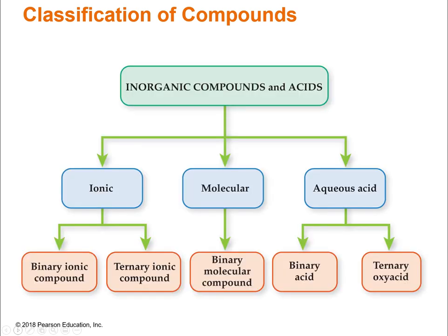This flowchart helps to classify all the various types of compounds. If you remember in Chapter 3, we had a very similar flowchart looking at matter. We broke matter down into pure substances and mixtures. Under the category of pure substances, we have compounds and elements. From compounds, we can have inorganic and organic. We're looking at inorganic compounds and acids — three major classes: ionic, molecular, and aqueous.